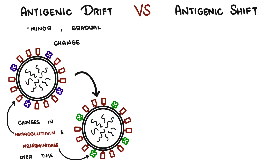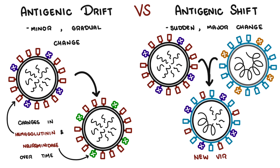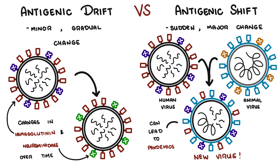Antigenic shift, on the other hand, is a sudden major change that can produce a new influenza A subtype. This can occur when a flu virus from animals gains the ability to infect humans. Such shifts can lead to pandemics and might introduce a virus against which the human population has little to no immunity.